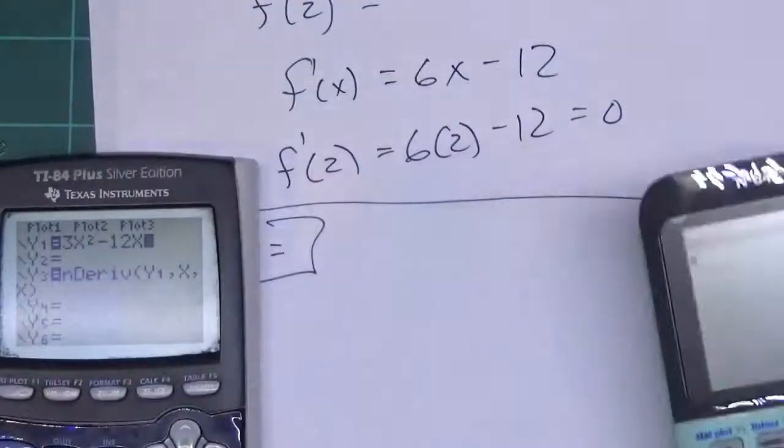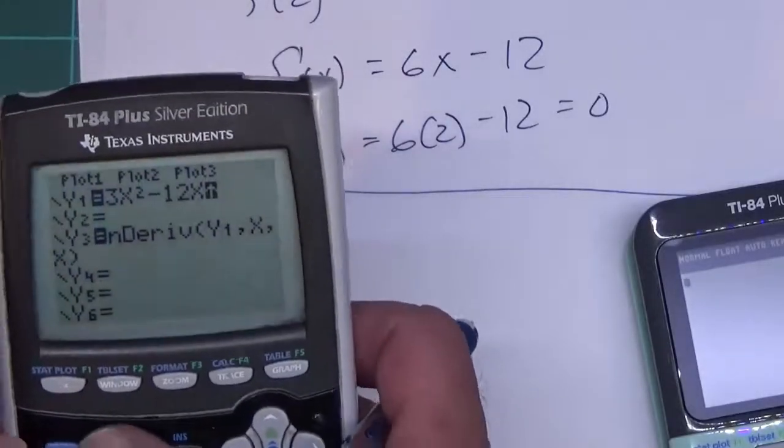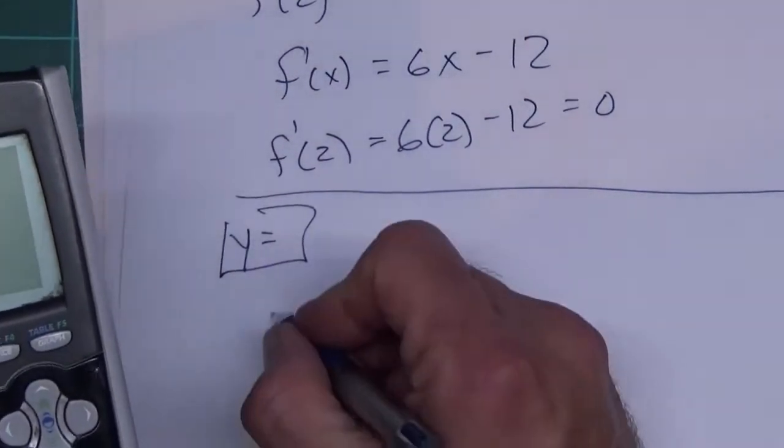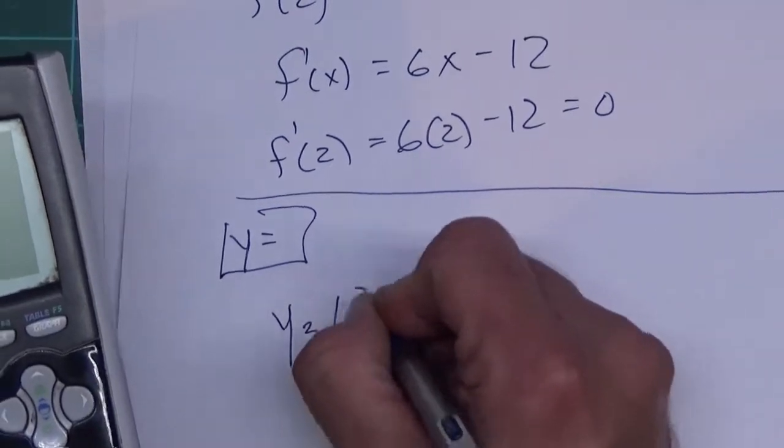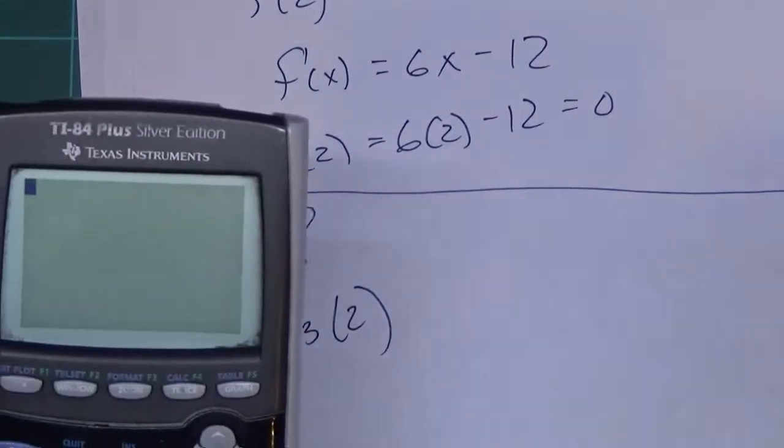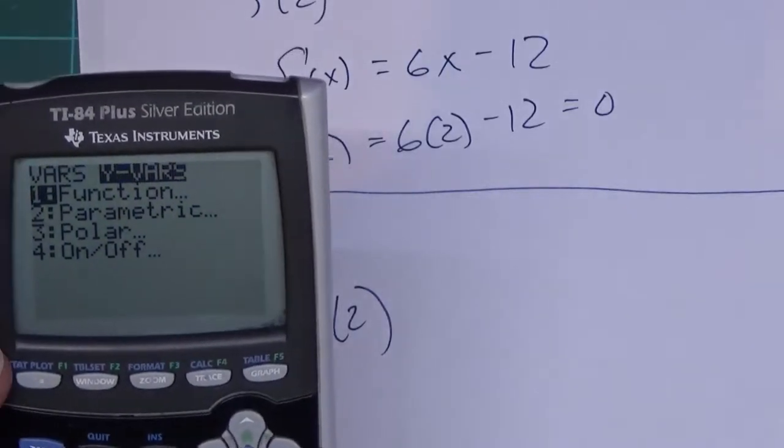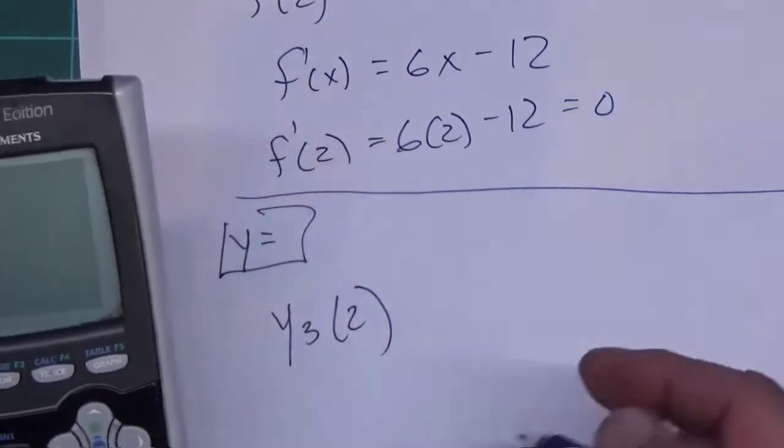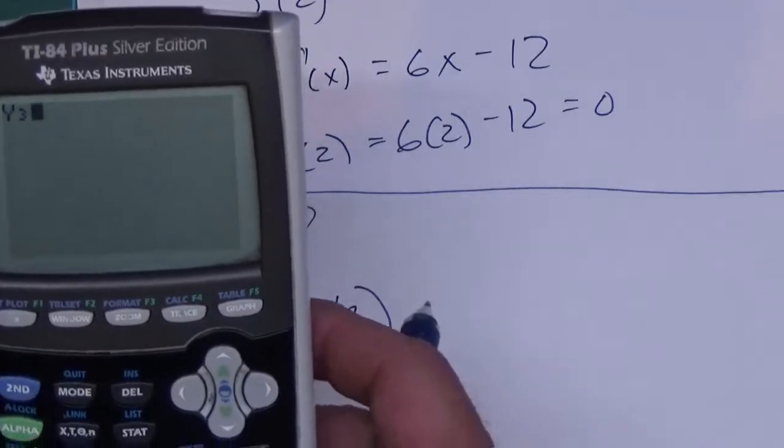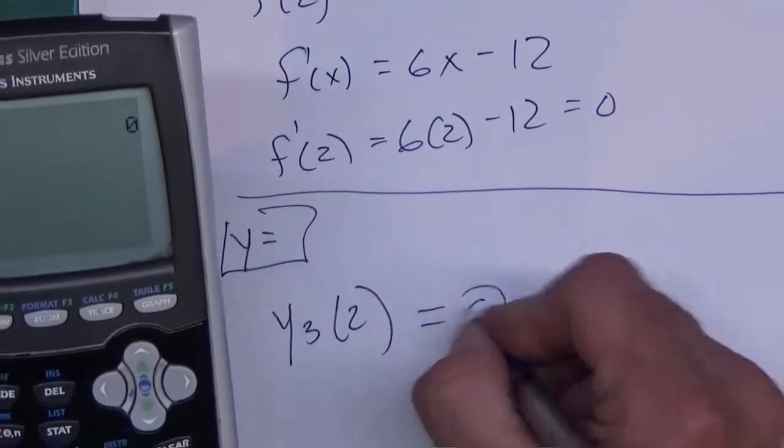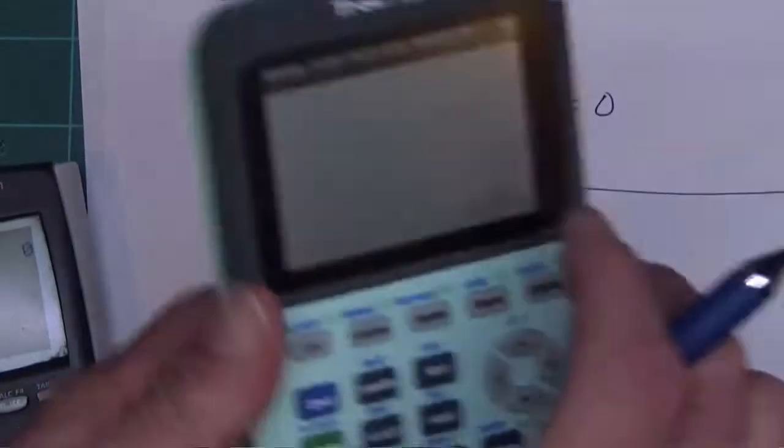After that, we're going to hit second quit on both so we get to the home screen. Now all I want to do on the home screen is type y3(2) and that'll give me my derivative. So I press vars over to y vars, press enter, go down to y3, put parentheses 2, close parentheses, press enter, and you notice it gives you 0, the same thing we got by doing by hand.